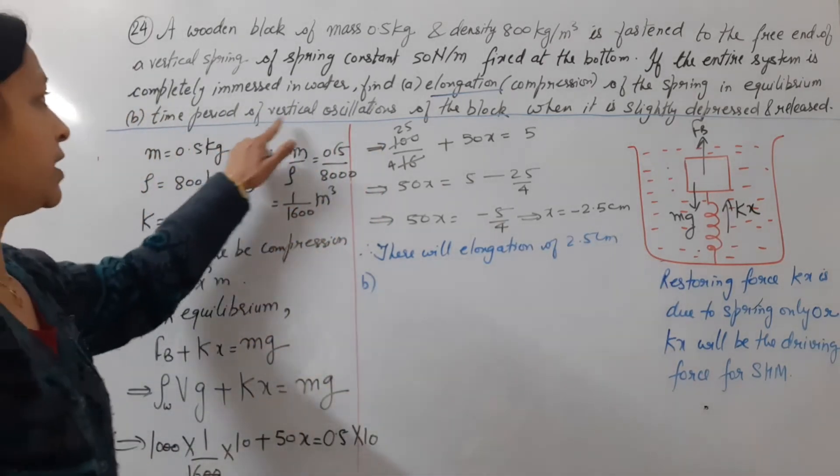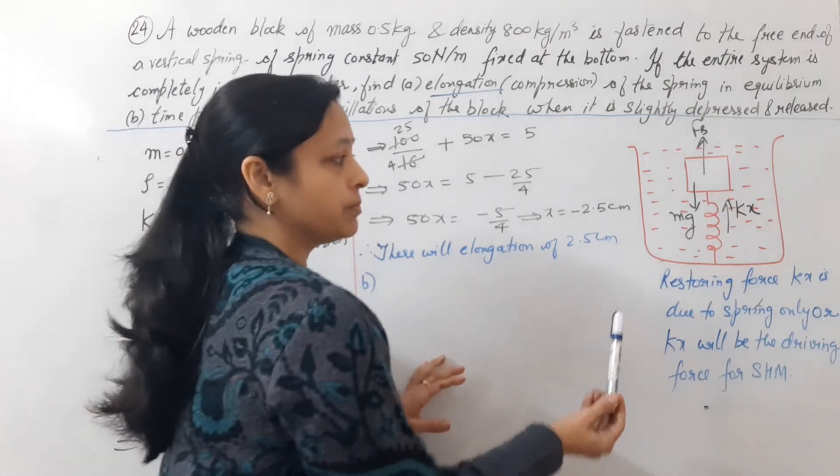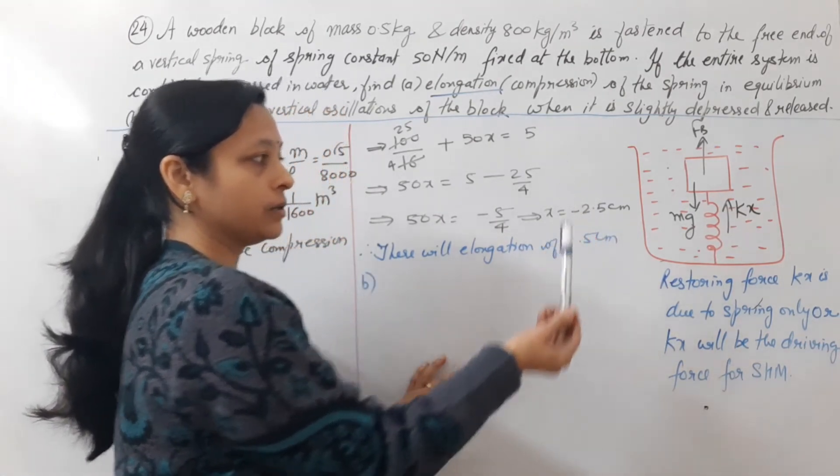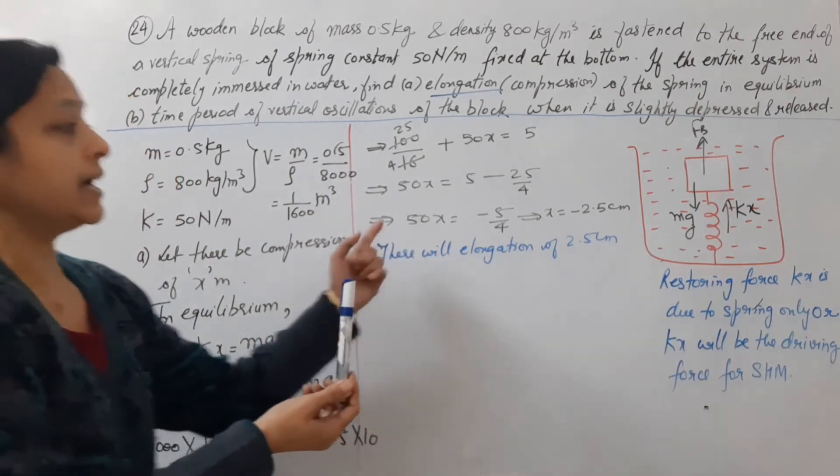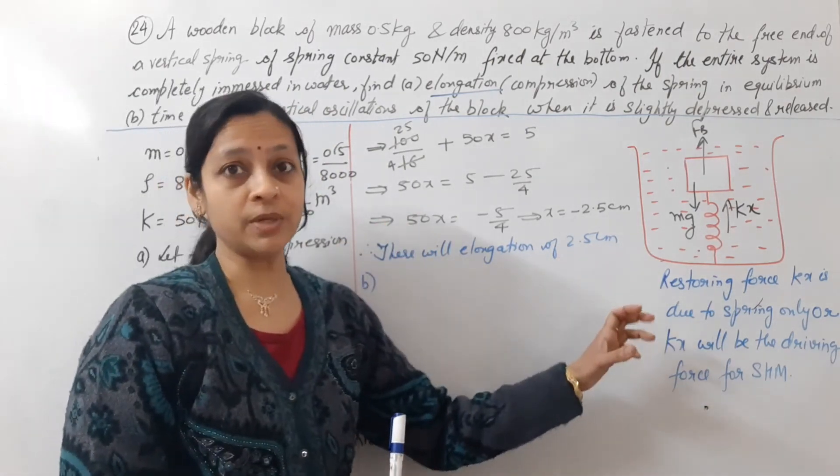Time period of vertical oscillations. Here elongation happened. So there will be vertical oscillations. It will be SHM. Time period.